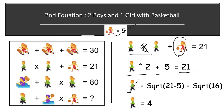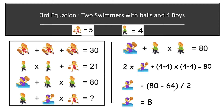Solving this equation: boy equals the square root of 21 minus 5, which is the square root of 16, and the square root of 16 is 4. From the second equation, the value of one boy is 4.